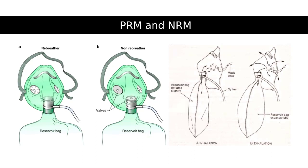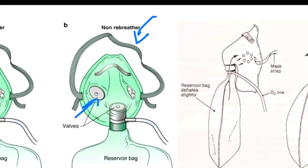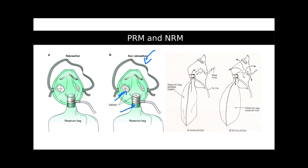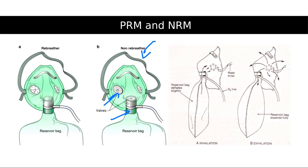If you take a look at a non-rebreather mask right over here, you'll notice that there is a valve on the exhalation port right there, as well as a bag between the reservoir bag and the mask. So, in essence, there are three of these one-way valves.